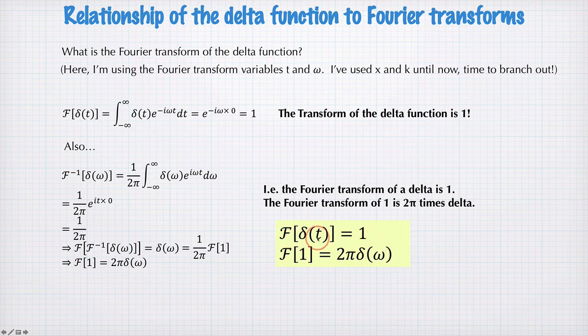So this one, the Fourier transform of this infinitely narrow thing has an infinite array of frequencies. And this Fourier transform of an infinitely wide thing has no frequencies at all.